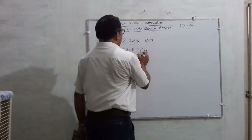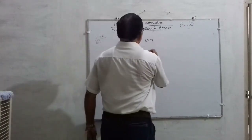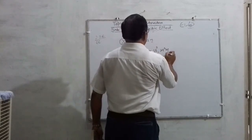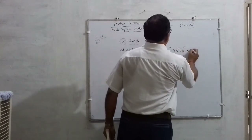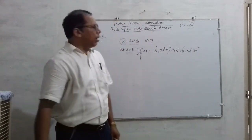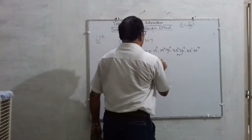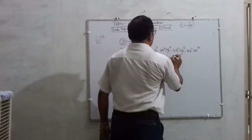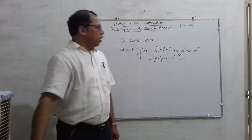If there are 29 protons, then no doubt that element is copper (Cu). The electronic configuration is 1s², 2s², 2p⁶, 3s², 3p⁶, 4s¹, 3d¹⁰ — in accordance with the Aufbau principle. Or simply you can write it as [Ar] 4s¹ 3d¹⁰.